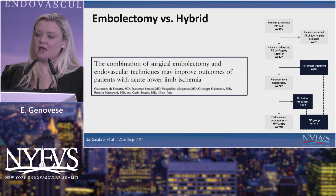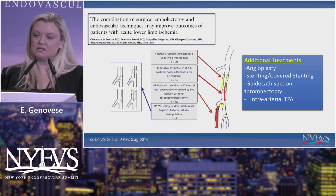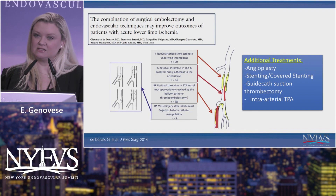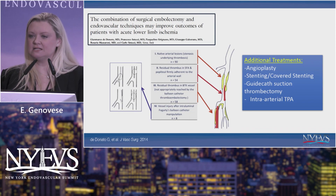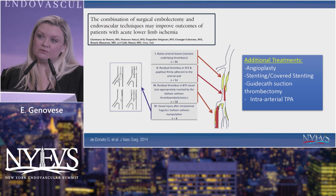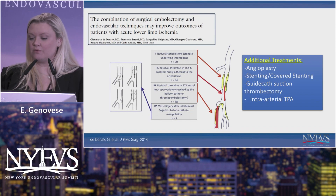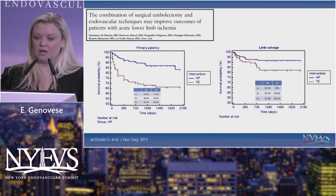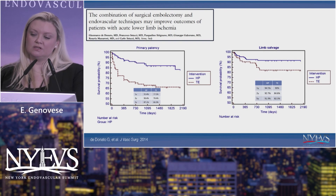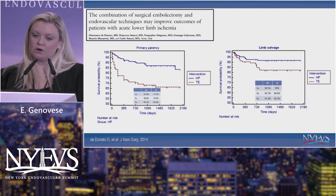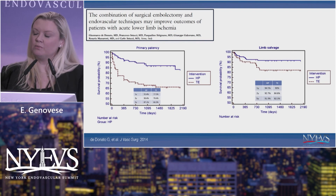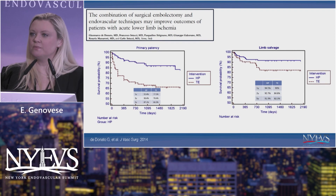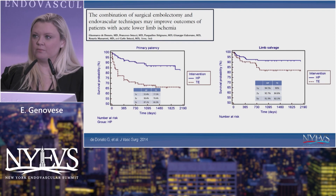There have been some studies looking at a combination hybrid approach — an embolectomy, and then if there's not a good outcome, moving on to an endovascular treatment. What this study demonstrated was that over 50% of patients, once you did the embolectomy, you had to do something more: treat underlying stenosis, stent an artery, get more residual thrombus you weren't able to fully clear with the Fogarty, or treat something more distally that embolized. Overall, this study showed a significant benefit with regards to patency and limb salvage, with the hybrid being a little bit more advantageous — though there's a pretty significant selection bias.